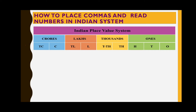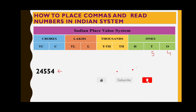Here I am taking the number 24554. We write the place values at the top of each digit. Place values are ones, tens, hundreds, thousands, and so on. We always start from the right side of the number — ones place — so: four is ones, five is tens, five is hundreds, four is thousands, two is ten thousands.